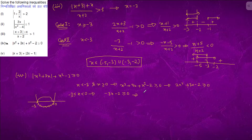From -3x - 2 ≥ 0 we get x ≤ -2/3. Taking the intersection with -3 ≤ x < 0, the solution for this case is x belongs to [-3, -2/3].